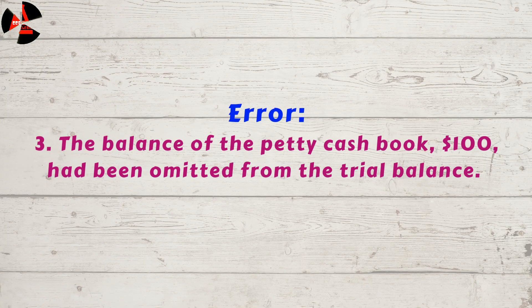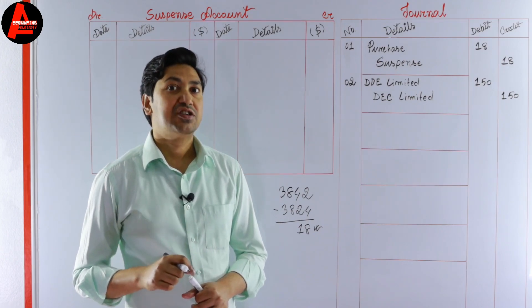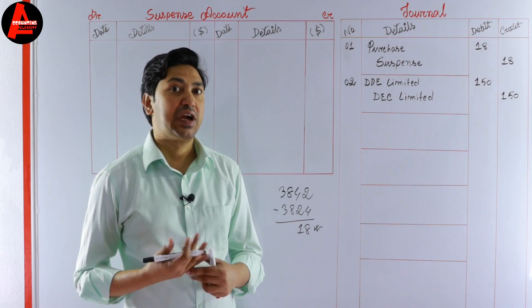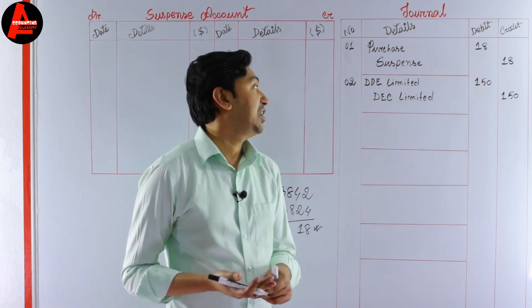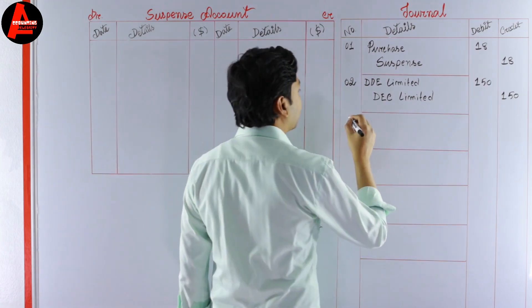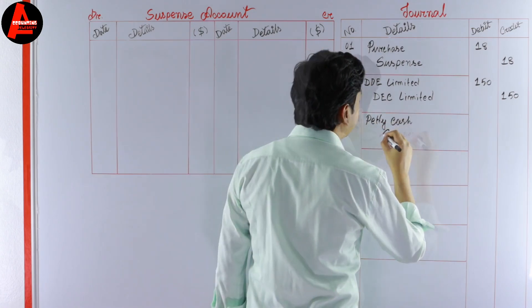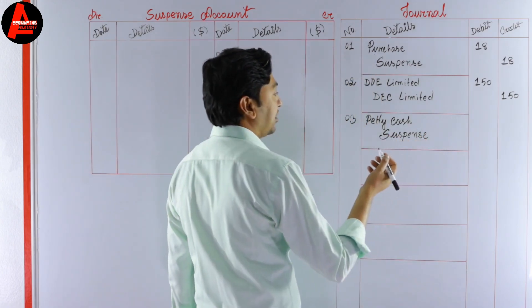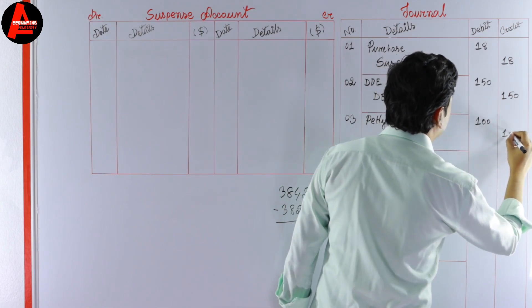Number three: the balance of the petty cash book, 100 dollars, has been omitted from the trial balance. The petty cash book balance should be debited, but it was omitted. To record it now: petty cash account to be debited and suspense account to be credited. The amount is 100 on the debit and 100 on the credit column.